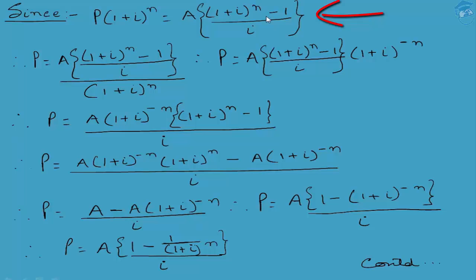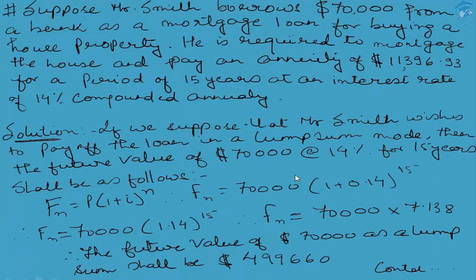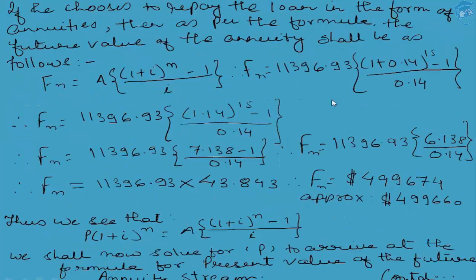We used a numerical to understand this, where a loan was being taken at present and the borrower was given an option to repay the loan against 15 years at 14% rate of interest at an annuity amount of $11,396.93. The second option was that the borrower wanted to repay the loan in one go as a lump sum payment. We found that when he chose to pay as a lump sum, he had to pay $499,660 USD at the end of the 15th year, and the same amount arrived by calculating the future value under the annuity schedule — so the amounts were almost identical.